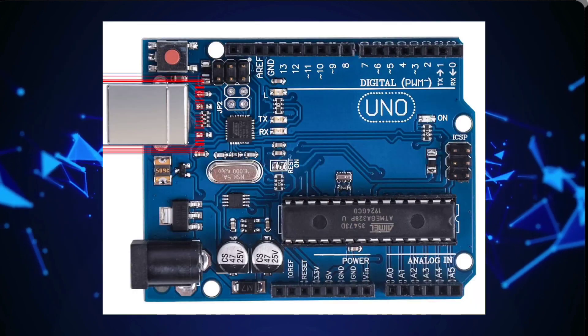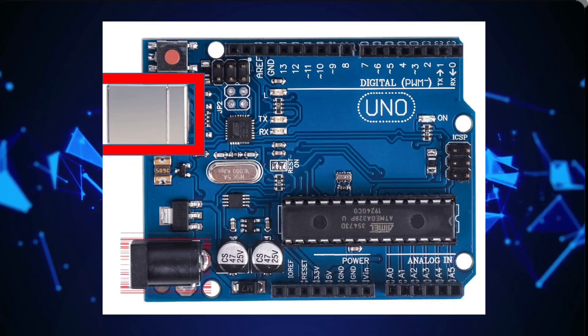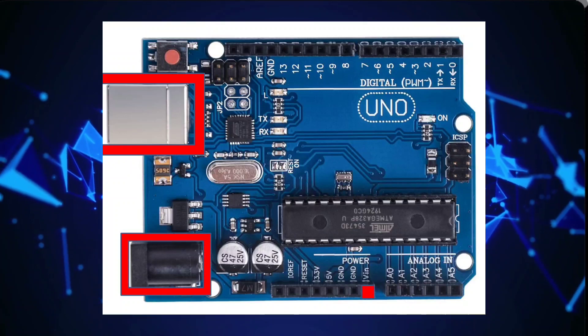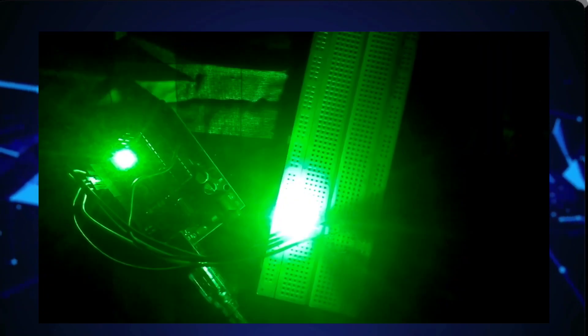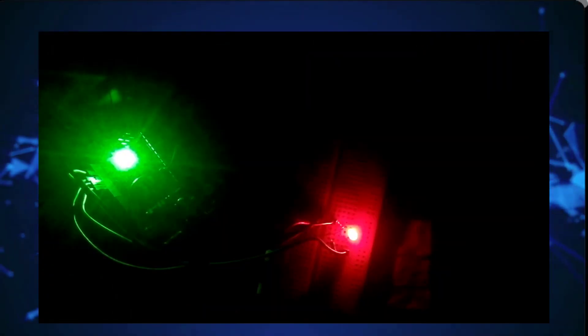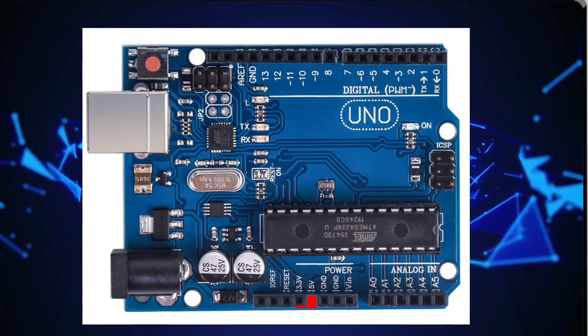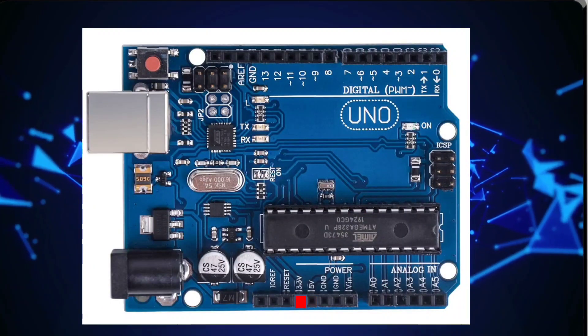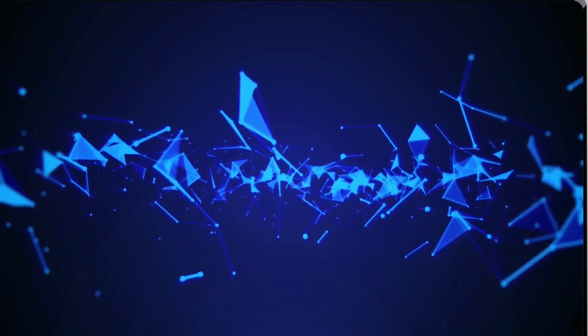Arduino Uno can be powered through a USB cable connected to a computer or a power adapter. It also has a barrel jack for an external power supply. The board has 5 volt and 3.3 volt power pins that can be used to provide power to external components. It also has ground (GND) pins for completing electrical circuits.